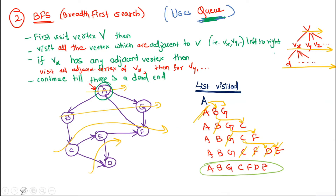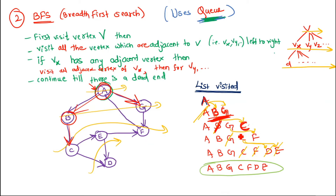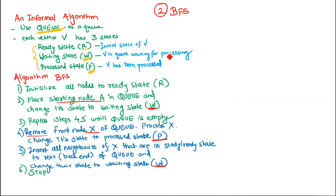For example, if we have vertex A, we visit it. For vertex A there are two adjacent vertices, so we write both of them at the same time. Then vertex B is not yet visited so we explore it and find all its adjacent vertices — that is C. Then G is not yet explored so we find all its adjacent vertices — that is F. We are arranging nodes level by level, so this is also called level-wise traversal.